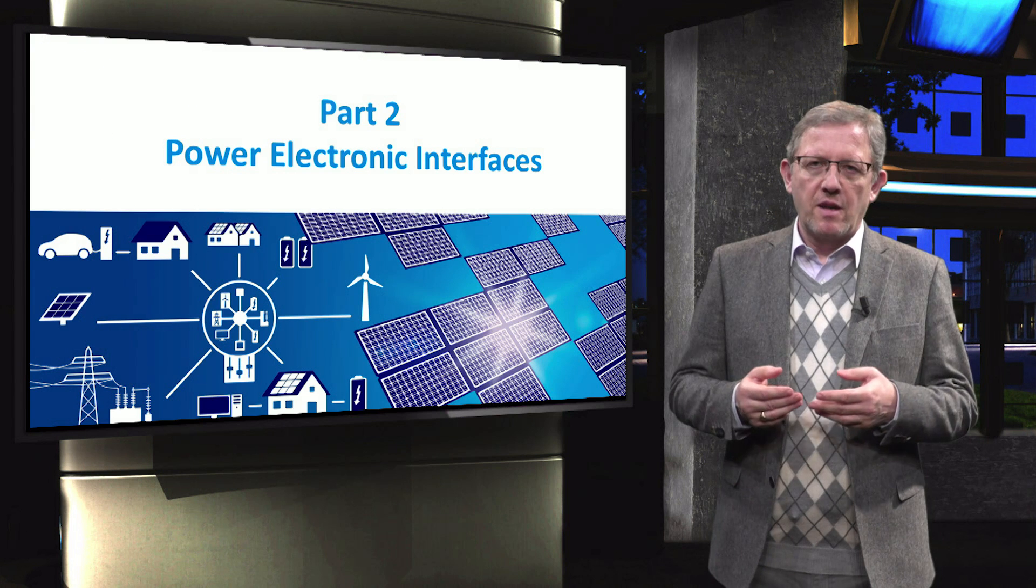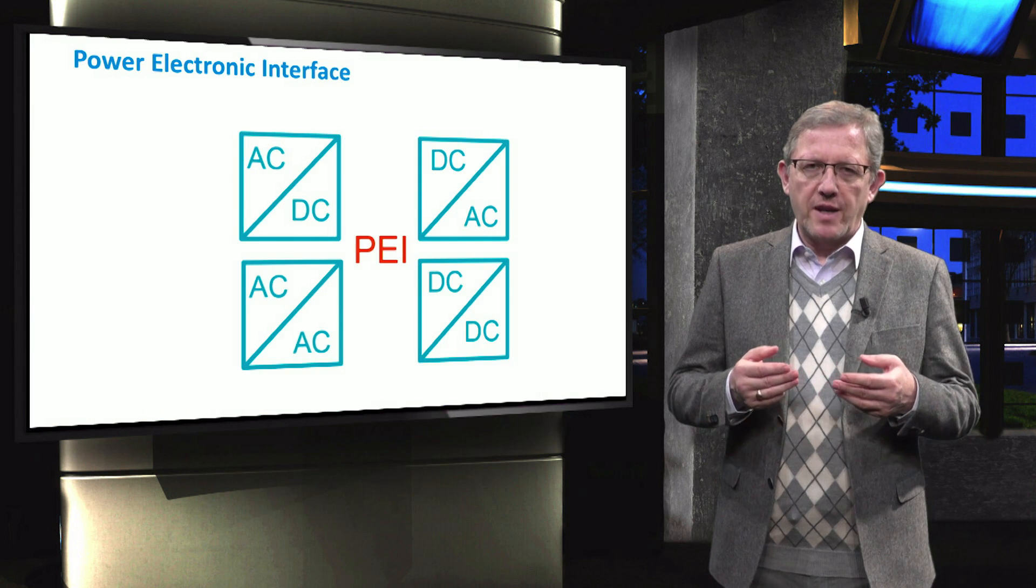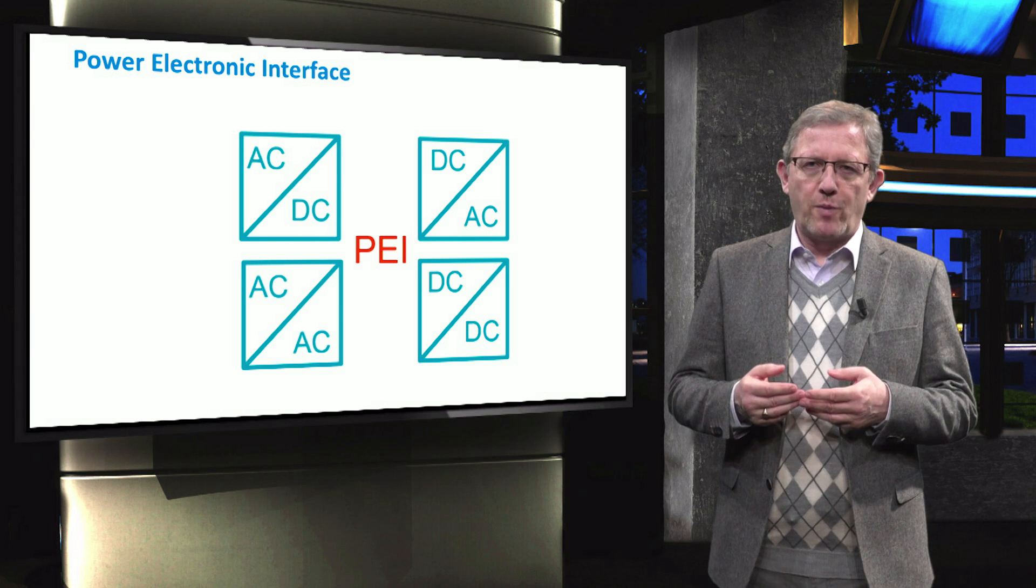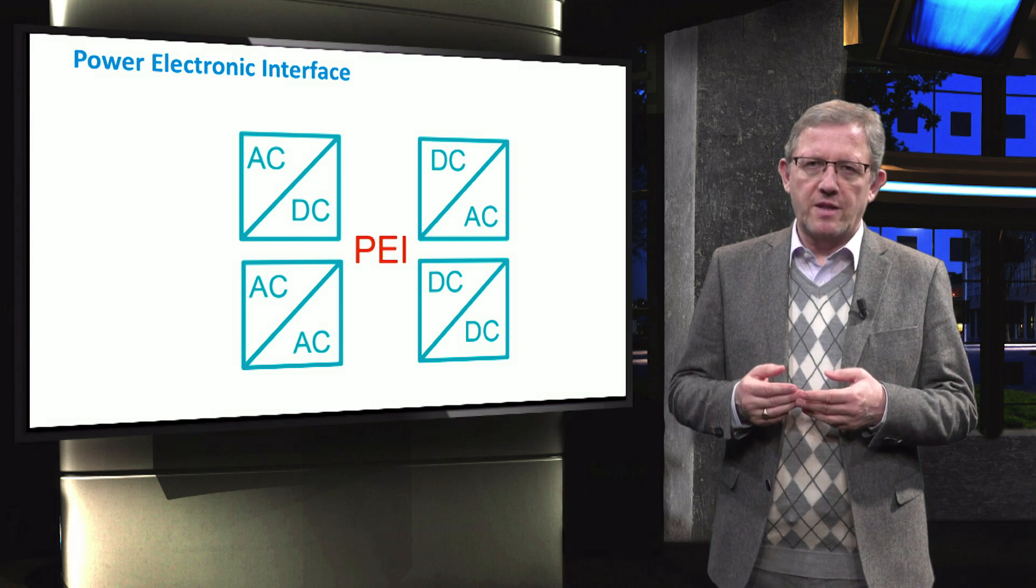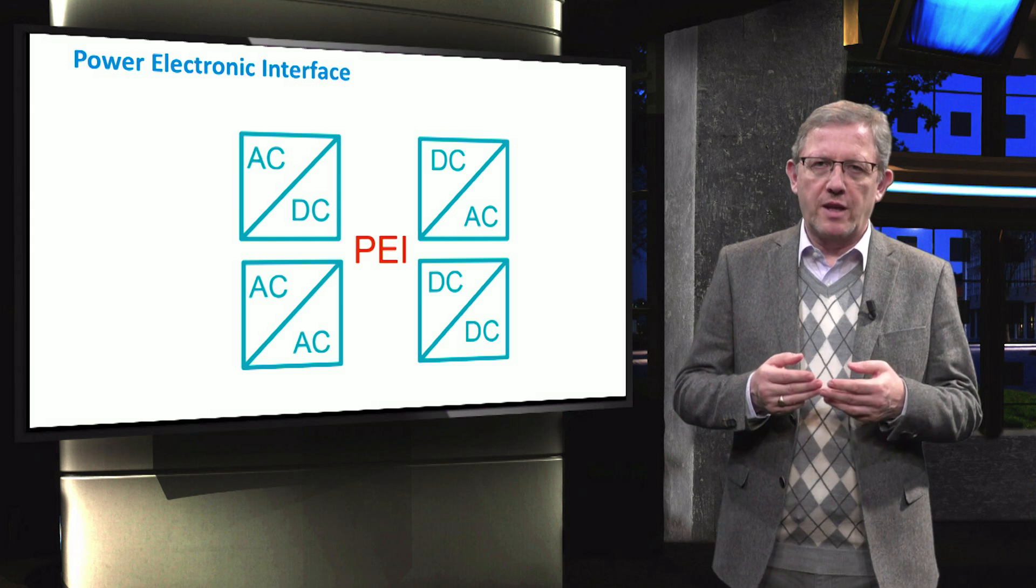In the second part, we will discuss the power electronic interfaces. Power electronic interfaces are important because no microgrid can be operated and properly controlled without these interfaces. You will learn about the different AC and DC power electronic interfaces.